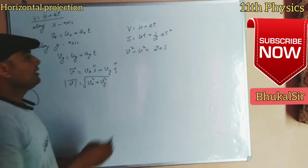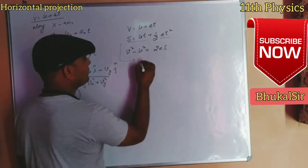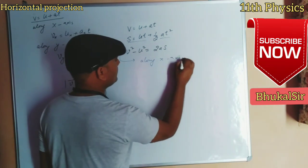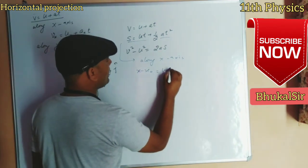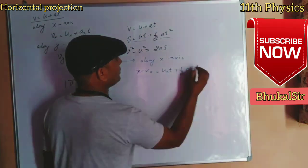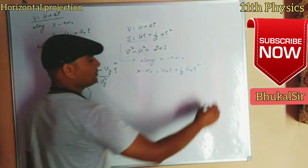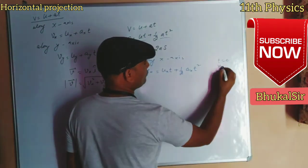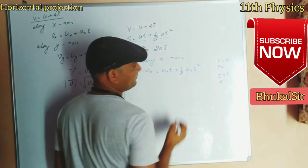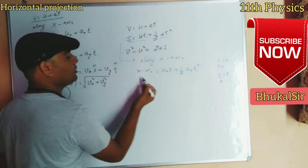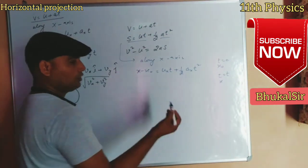Next, the second equation — displacement. Along the x-axis it is written as: x − x₀ = Ux·t + ½·Ax·t². Here, x₀ is the initial position at t = 0, x is the final position, so the displacement x − x₀ = Ux·t + ½·Ax·t². Along the y-axis it is: y − y₀ = Uy·t + ½·Ay·t².